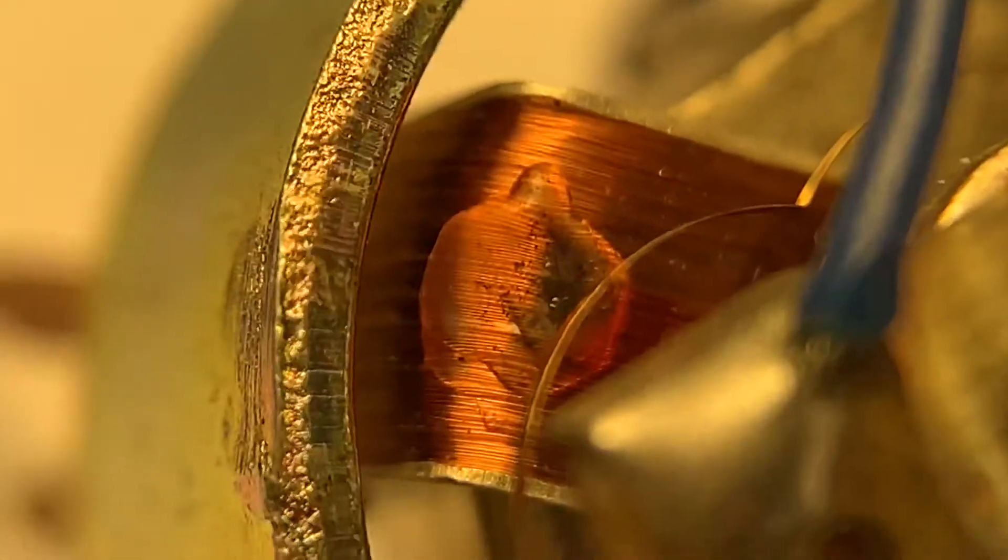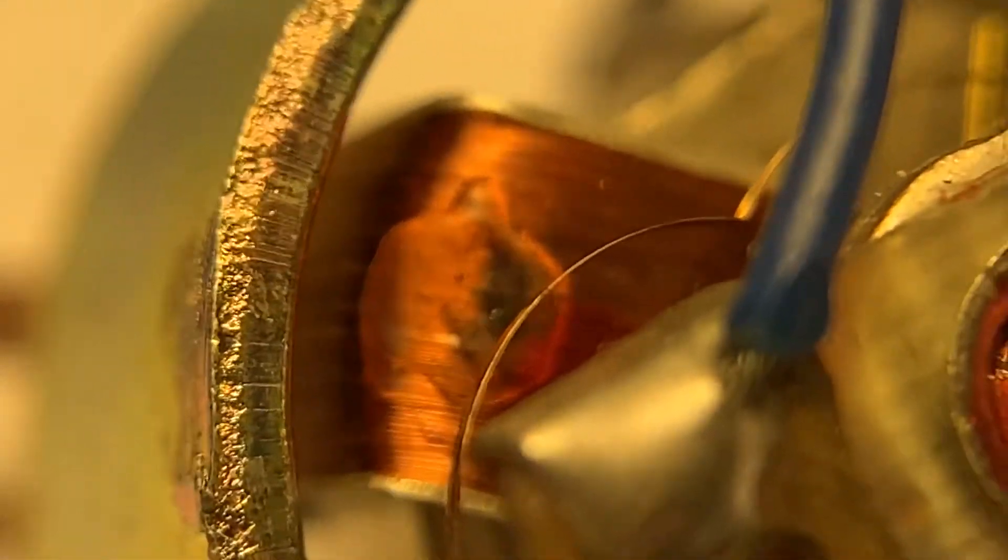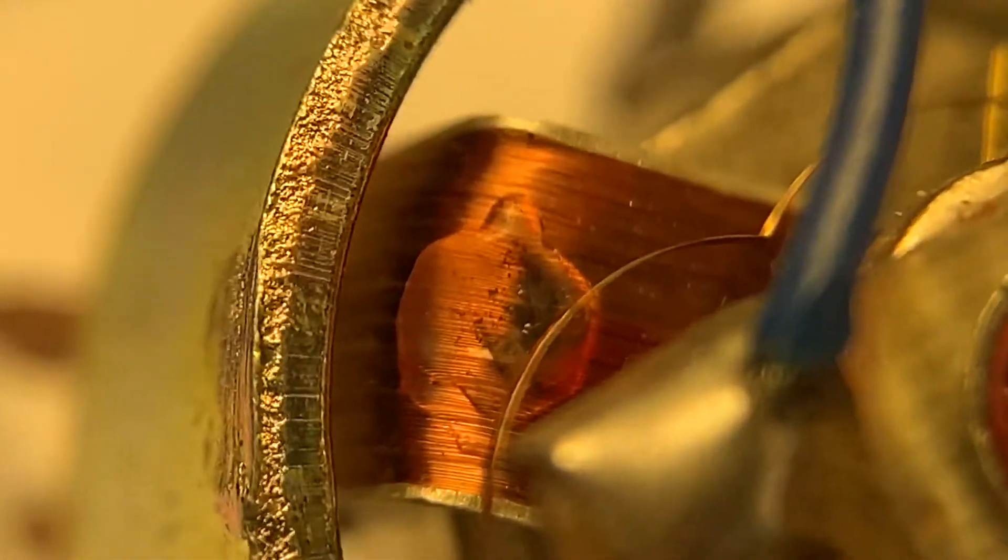That's the moving coil, the galvanometer coil that the indicator is attached to.